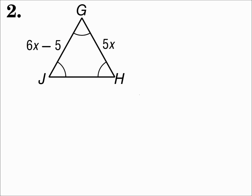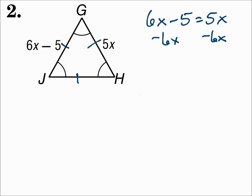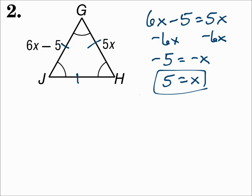Number two: in this triangle all angles are congruent. When all angles are congruent, all the sides are congruent as well, which means any two side measures have to be the same. So make those measures equal each other: 6x minus 5 equals 5x. Subtract 6x from each side: negative 5 equals negative x. Therefore x equals positive 5.